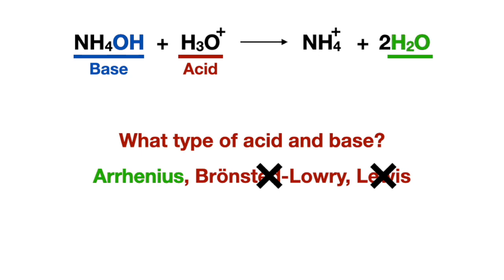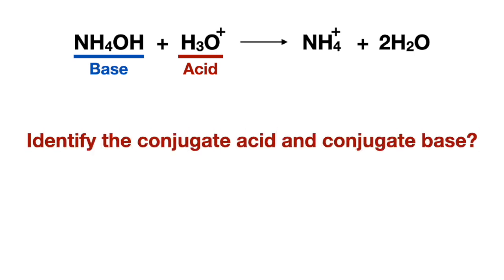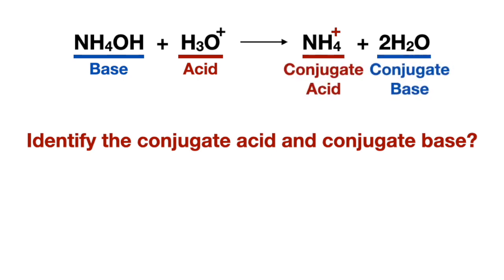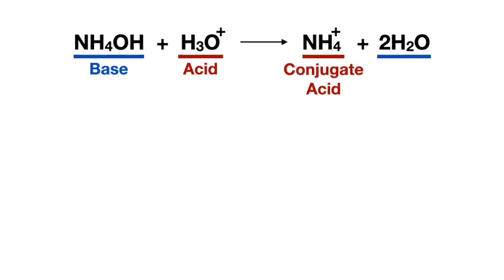Water appears on the product side, which is also an indicator of an Arrhenius acid-base reaction. To identify the conjugate acid and base: the left product has a positive charge, making it the conjugate acid and the other product the conjugate base. You can confirm this by following the base to the product side to see that it donated a hydroxide and became positively charged, and following the acid to the product side to see that it donated a proton and lost its positive charge. So here's the base and its conjugate acid, and the acid and its conjugate base.